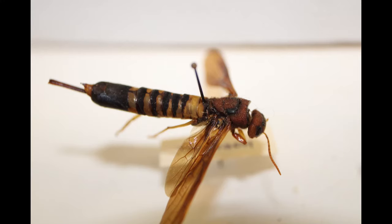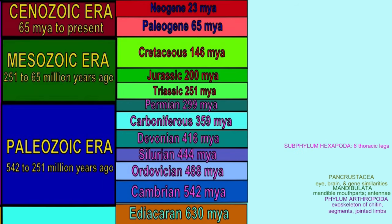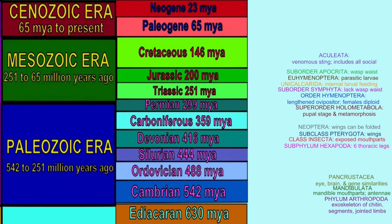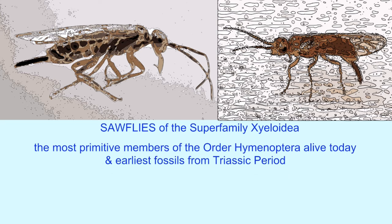The features which we associate with bees, wasps, and ants evolved slowly throughout the evolutionary ancestors of these modern superfamilies. These superfamilies first appear in the Cretaceous period, and some of their anatomical features evolved in early arthropods, in early insects, and in the early members of the order Hymenoptera, which first appear in the Triassic period. The first members of the order Hymenoptera are classified as sawflies.